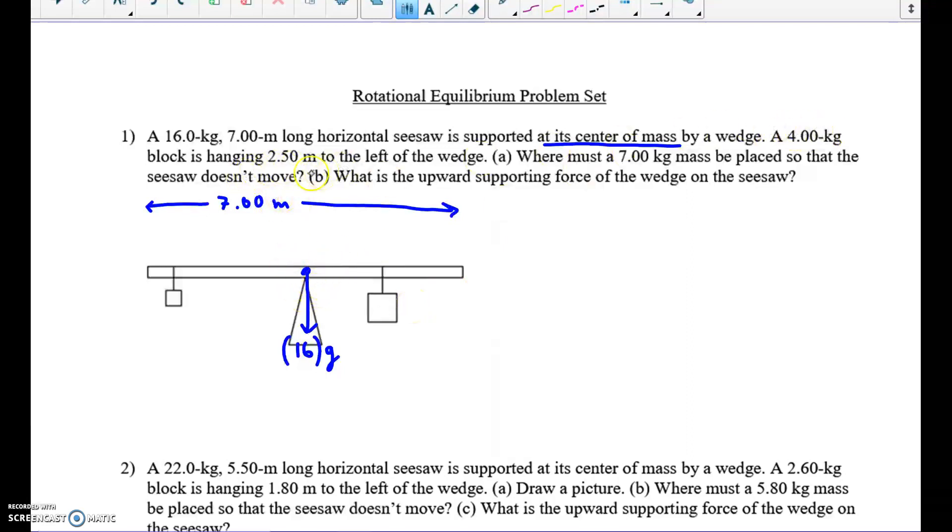We've got a 4 kilogram block hanging 2.5 meters to the left. So here, if we go left, 2.5 meters. The mass here is 4 kilograms. So I'm just going to draw a gravity force down. And that gravity force, well, this block is pulling down with its gravity, 4 times 9.81. It's pulling down with its gravity force on the seesaw.